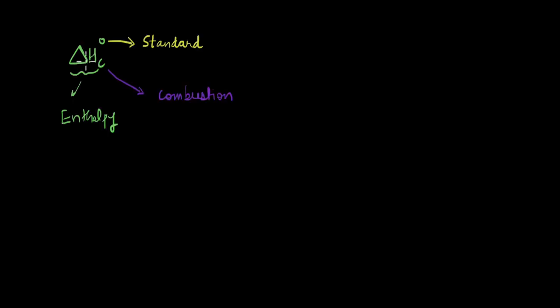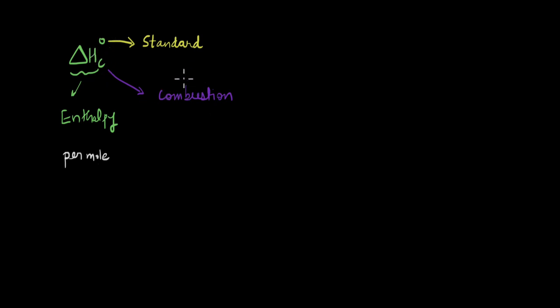We'll be talking about the standard enthalpy of combustion, which is denoted by delta Hc knot. The delta H is for enthalpy, C is for combustion, and the knot or circle here is the standard part. When we talk of combustion, we're referring to a reaction with oxygen. So the standard enthalpy of combustion means we are calculating the enthalpy per mole when the reactant reacts with oxygen and all the reactants and products are in their standard states.